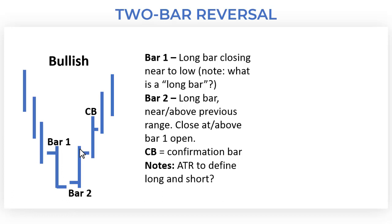Bar 2 is almost a mirror image of bar 1 — so we've got a long bar with the close at or above the open of bar 1, and near or above the range of bar 1 also. And then we've got a confirmation bar which closes above both of these.